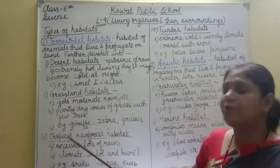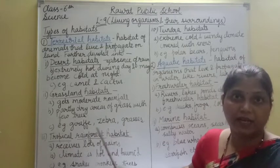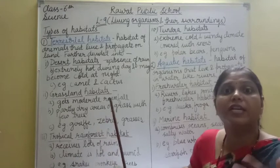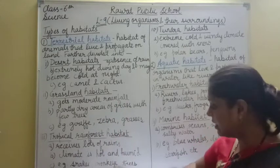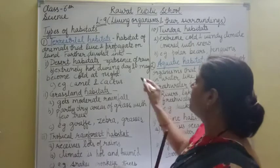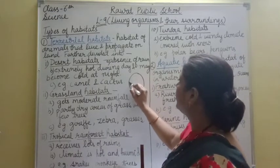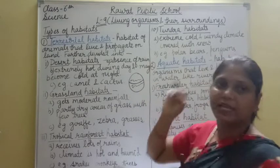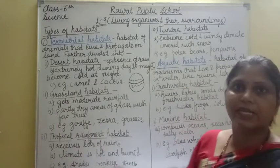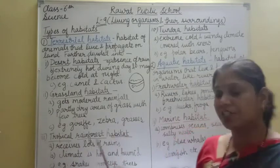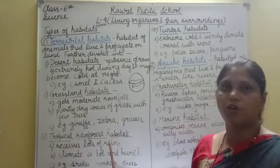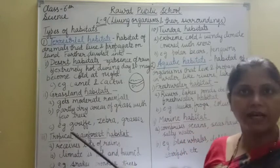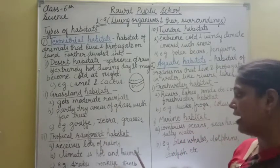Next type is tropical rainforest habitat. Tropical rainforest habitat वो areas हैं जो near to the equator होते हैं. SST में आपने equator पढ़ा था — जैसे यह हमारी earth है, equator यह बीच में होता है. तो areas जो equator के पास वाले होते हैं, यह आपके tropical rainforest habitat के अंदर आते हैं. यहां lots of rain receive होती है.